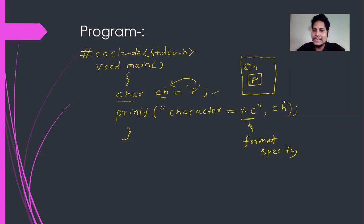So inside the character, the value is p, we have already stored in the main memory. This is the main memory. The value is stored. So this will print the output as, the output will be character that is equal to p.